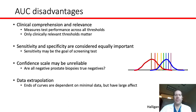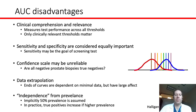The ends of the curves may have minimal data but a large effect. Additionally, the prevalence of disease is important when looking at test positivity. Implicitly, these curves assume a 50% prevalence, when in practice true positives are increased if there is a higher prevalence.